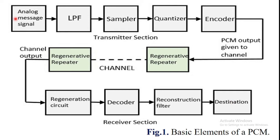The transmitter section of a pulse code modulator circuit consists of three blocks: sampling, quantizing, and encoding. These three blocks are performed in the analog-to-digital conversion section.